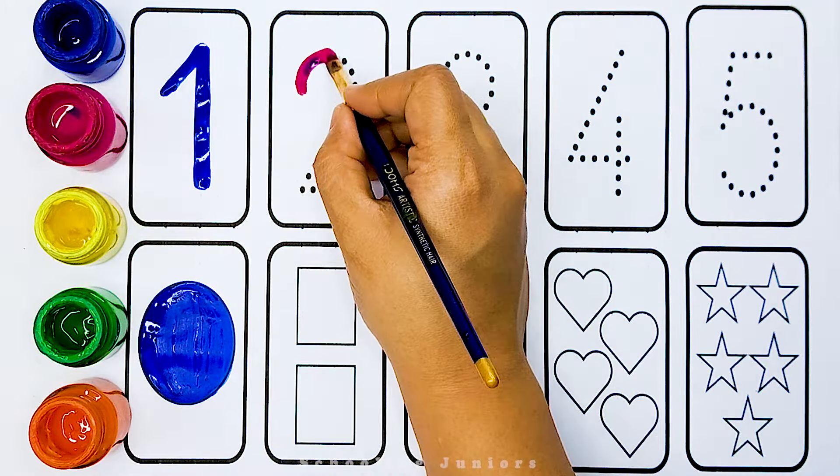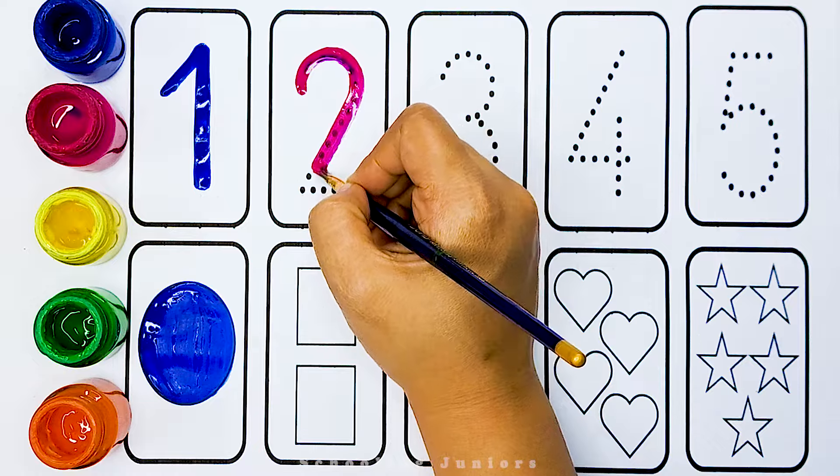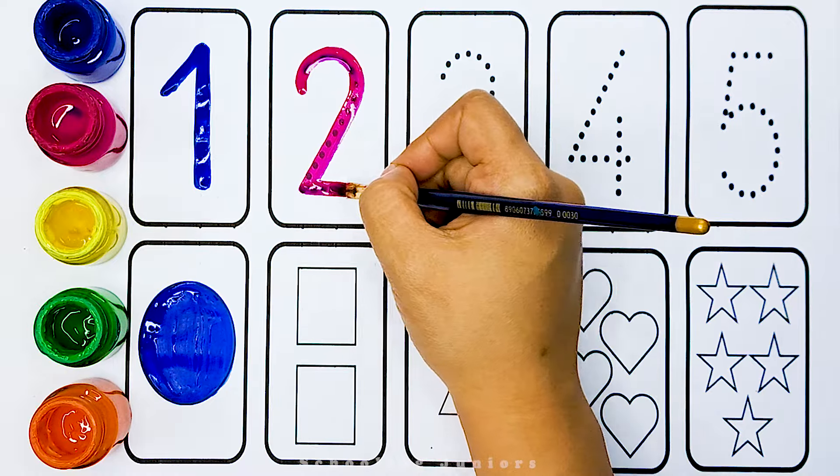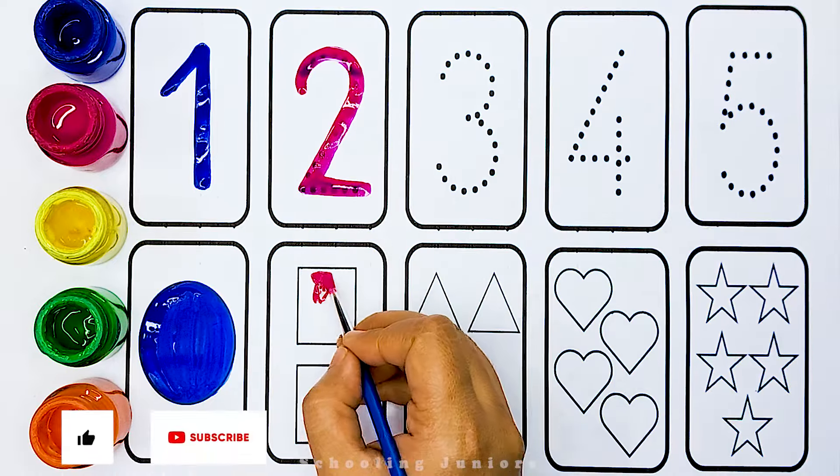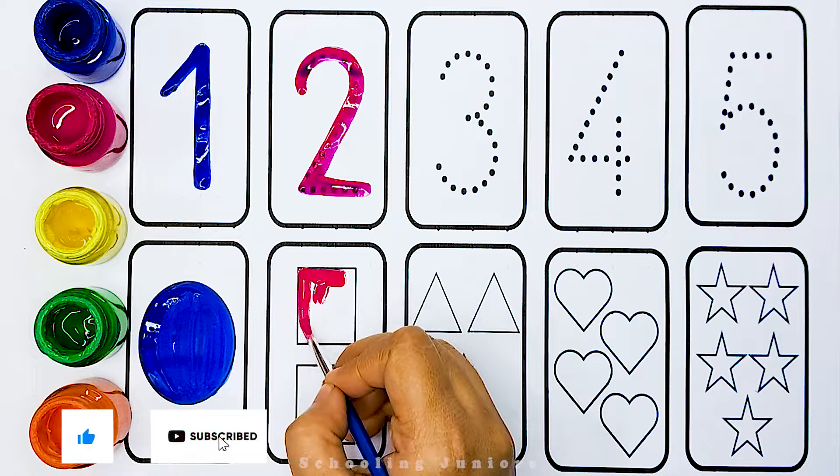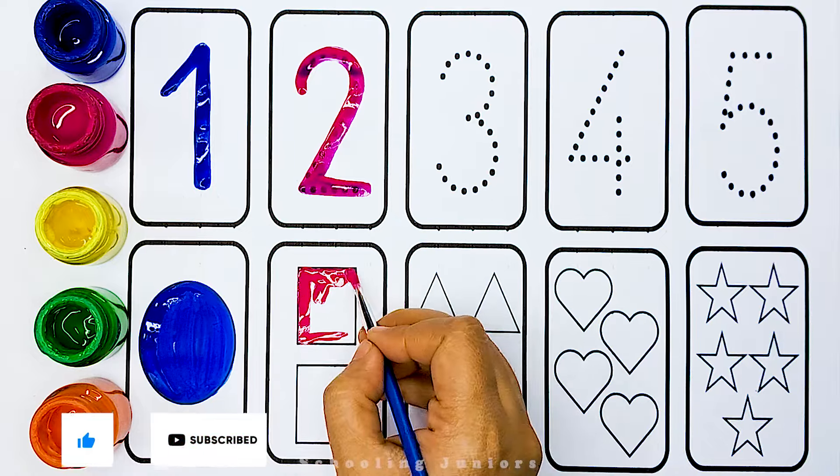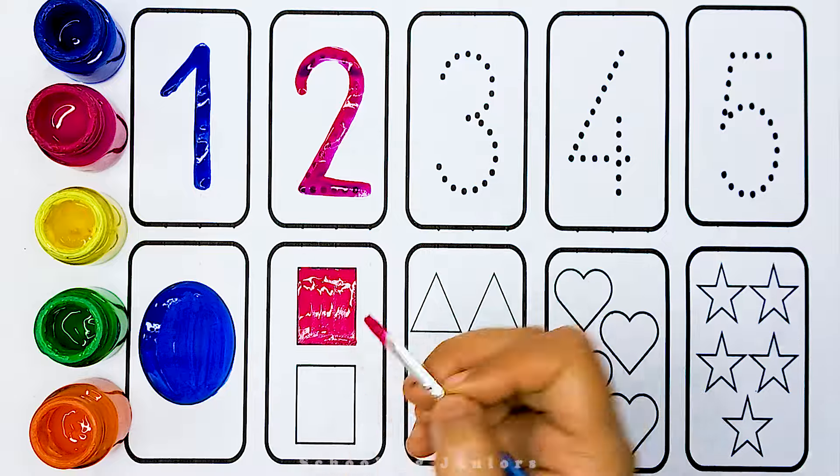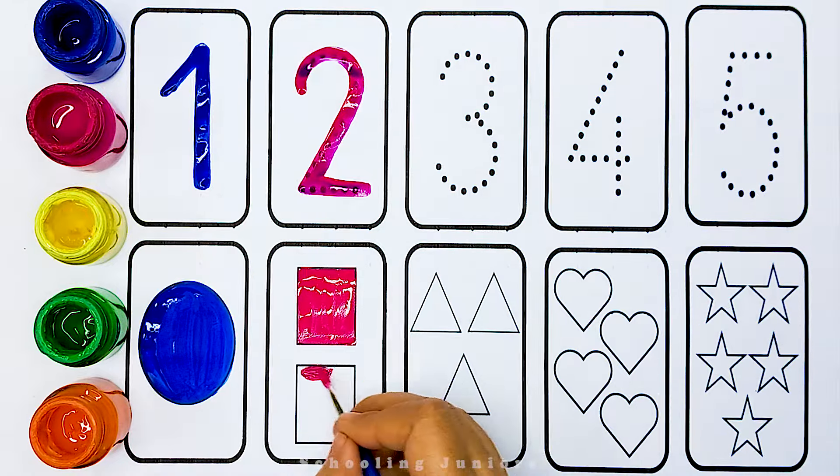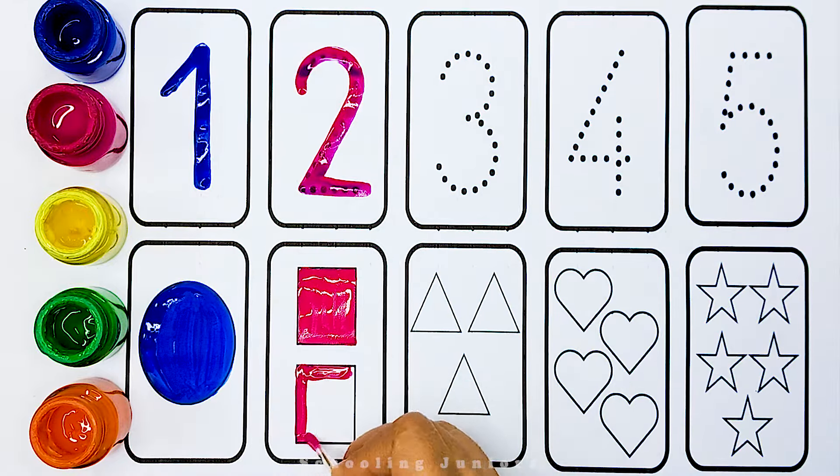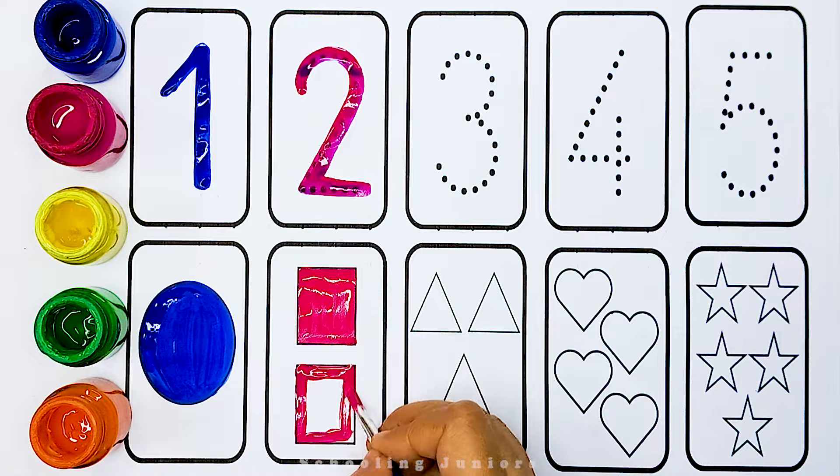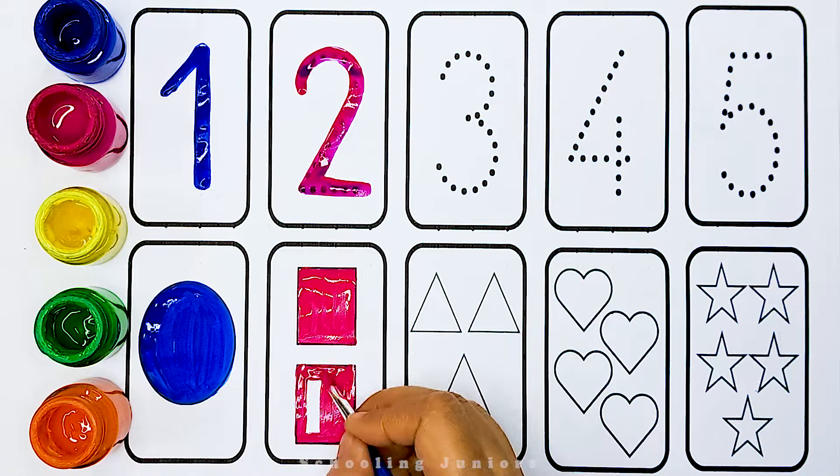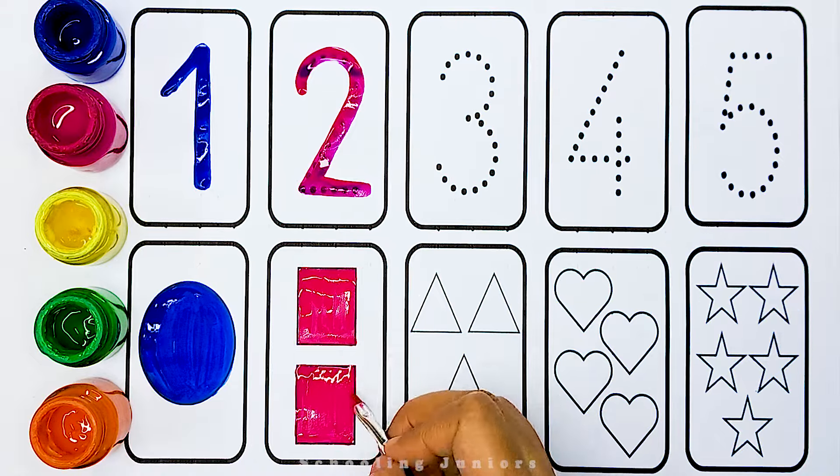Number two. T-W-O. Two. Two squares. One. Two. Two. One. Two. Square.